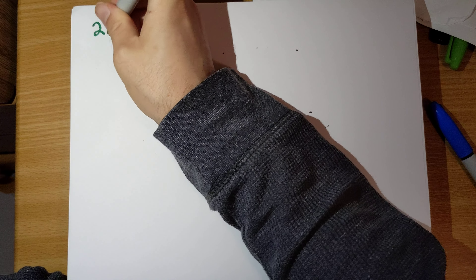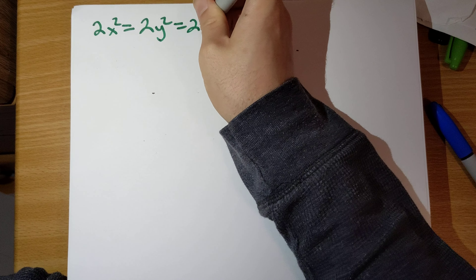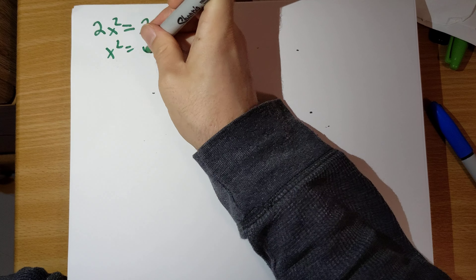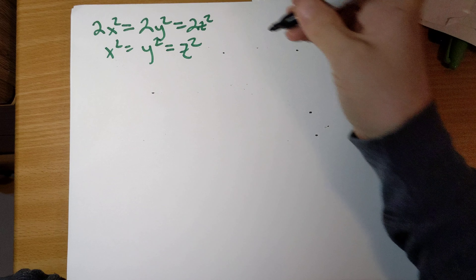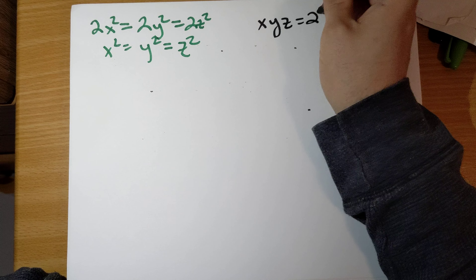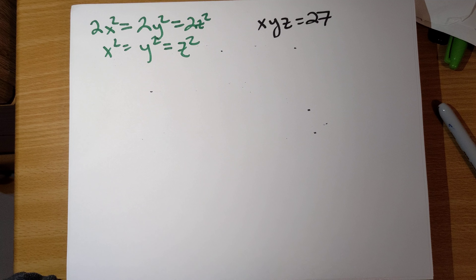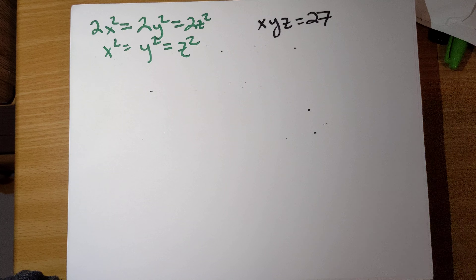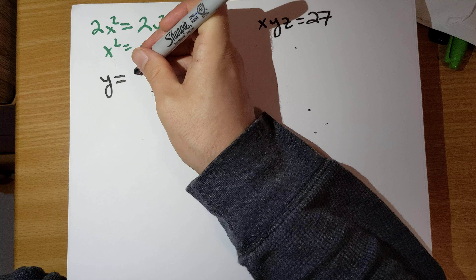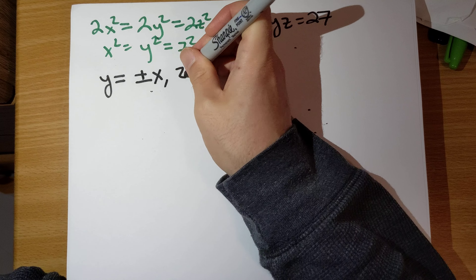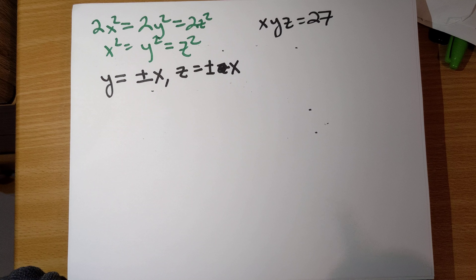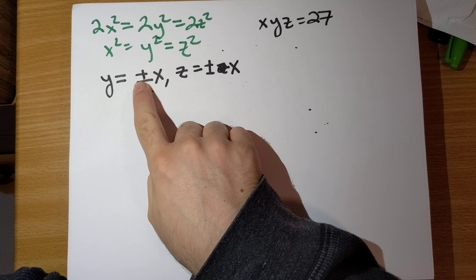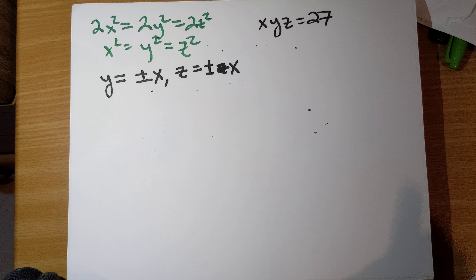So Lagrange multipliers: gradient of f equals lambda times the gradient of g. The gradient of f is (2x, 2y, 2z), equal to lambda times the gradient of g which is (yz, xz, xy). So our equations are: 2x = λyz, 2y = λxz, and 2z = λxy. Of course, we also know that xyz must equal 27.